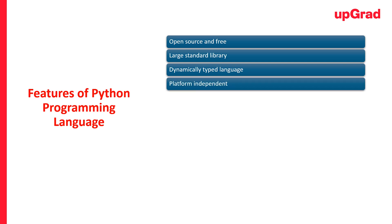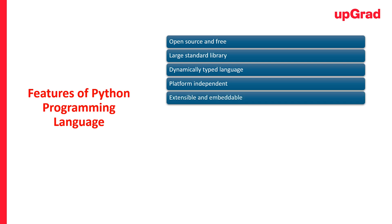At number four, we have platform independent. Python offers platform independence, enabling code execution across various platforms including Windows, Mac, and Linux without platform-specific adaptations. Then comes extensible and embeddable. Python's extensibility allows integration with C and C++, offering versatile development options. Developers can seamlessly embed Python code into various project developments in different languages.